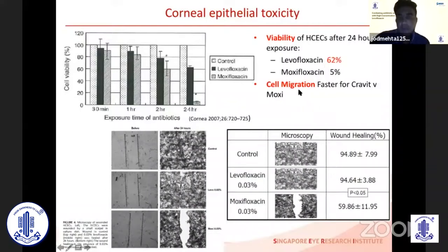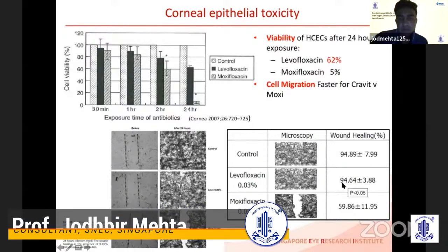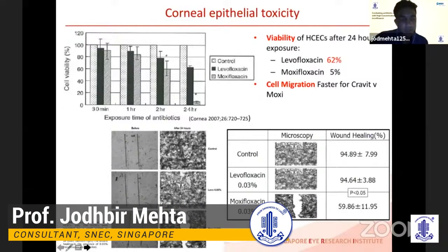If you have a patient undergoing surface ablation therapy where the epithelium has been denuded and you want it to grow back quickly to reduce the rate of infection, you want something that will aid cellular migration rather than inhibit it. When looking at migration assays comparing control, levofloxacin, and moxifloxacin, the differences in percentage wound healing are significant: 94% with levofloxacin compared to almost 60% with moxifloxacin.